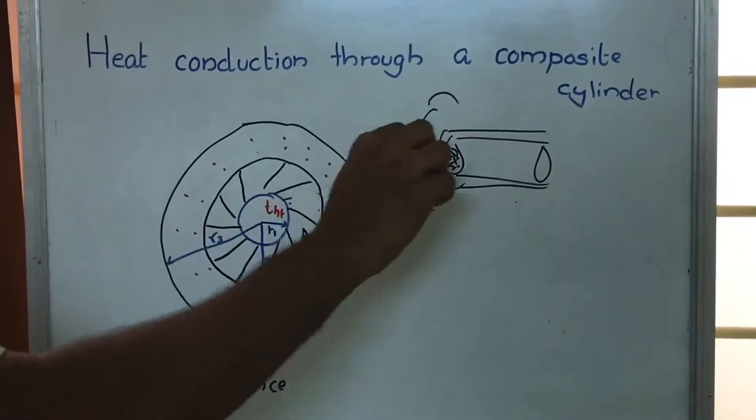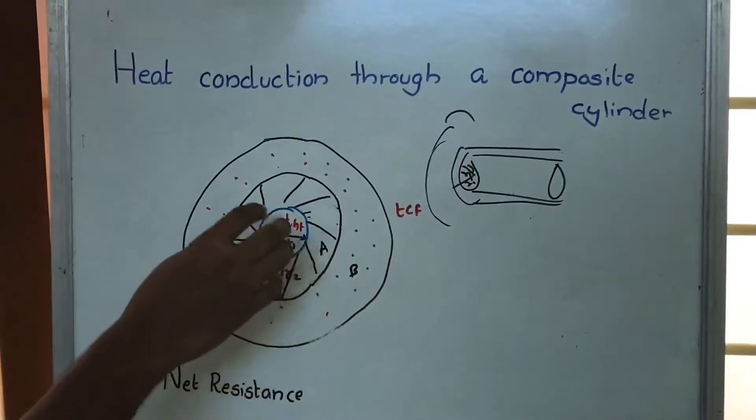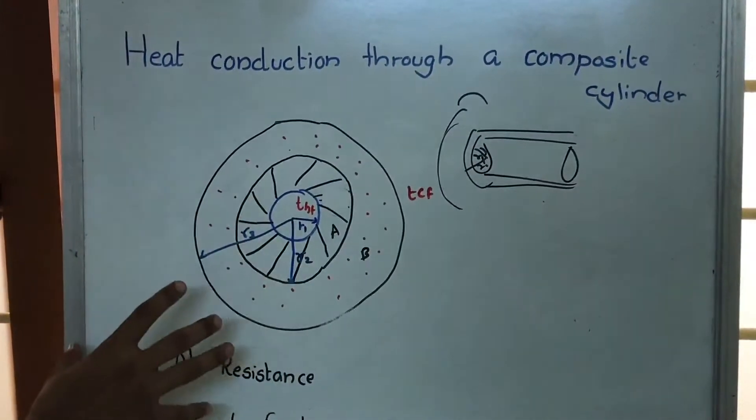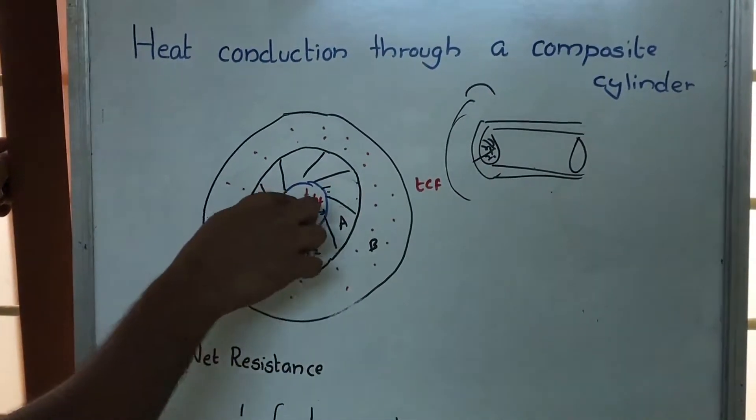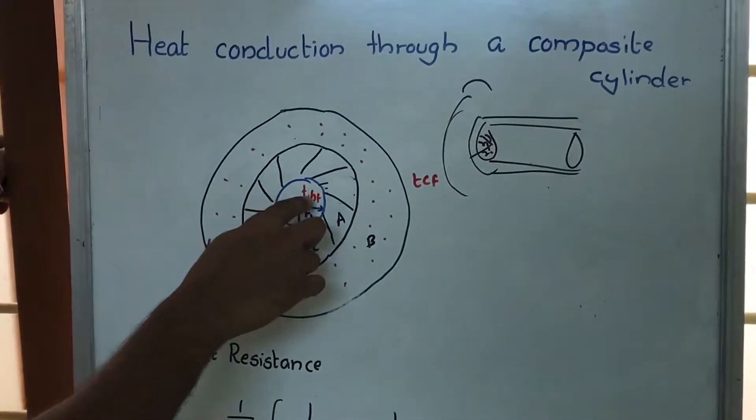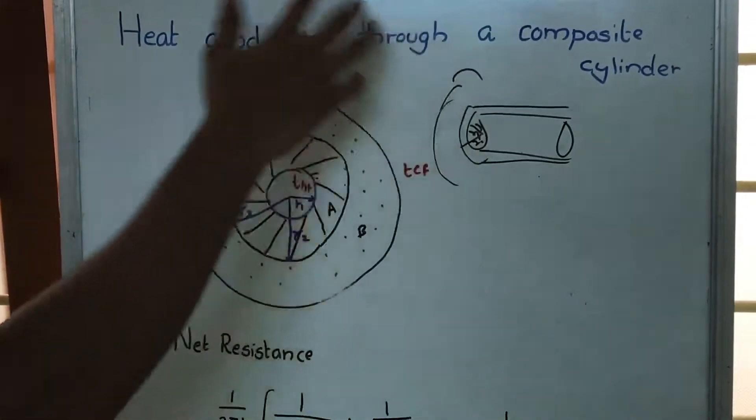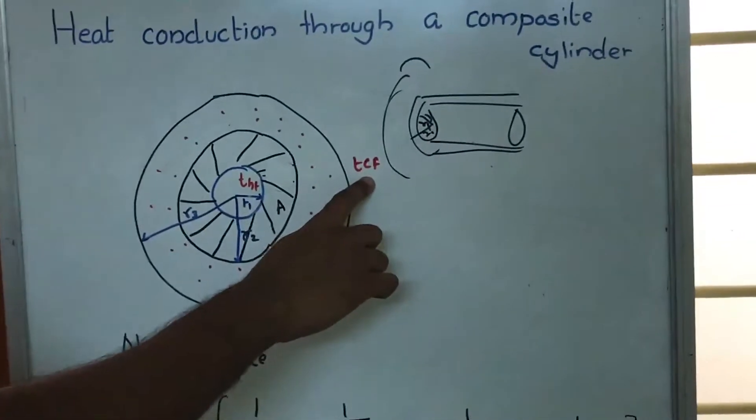Here in the actual case there is only one cylinder, but to study we are considering two cylinders: cylinder A and cylinder B, solid cylinders. Inside there is hot fluid with temperature THF, and outside there is cold fluid with temperature TCF.